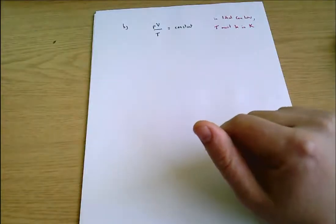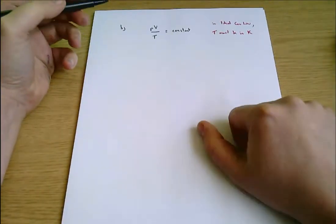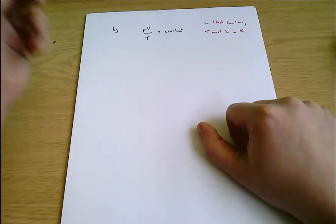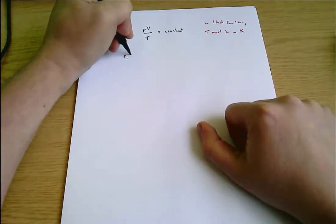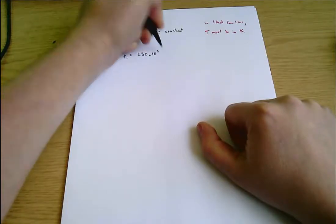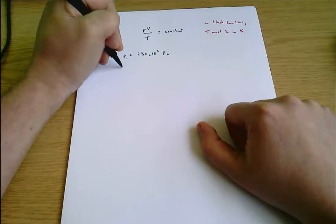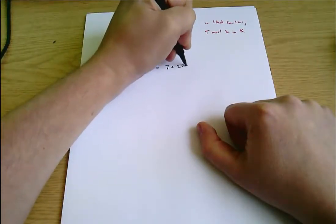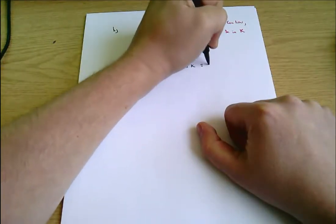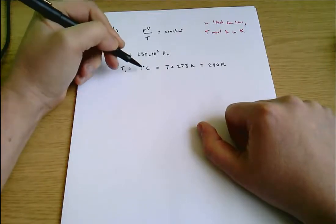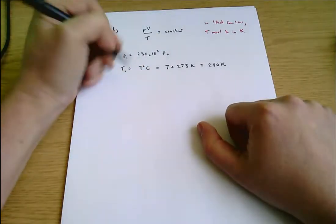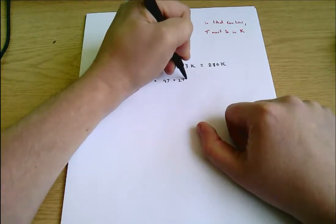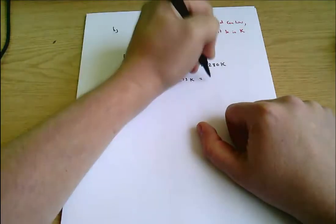Before, because we were looking at temperature differences, we could work with degrees Celsius. Here, because we need absolute temperature, it's got to be in Kelvin. P1 equals 250 kilopascals, or 250 times 10 to the 3 Pascals. T1 equals 7 degrees C, which equals 7 plus 273, which equals 280 Kelvin. T2 equals 47 degrees C, which equals 320 Kelvin.